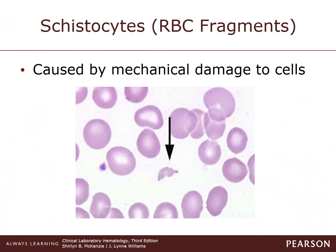Schistocytes are red cell fragments caused by mechanical damage to the cell. They appear in a variety of shapes such as triangles, commas, and helmet shapes. Because they are fragments of cells, they are usually microcytic. They maintain normal deformability, but their survival in peripheral blood is reduced. This can be determined by the physician to be significant if there is intravascular hemolysis happening.